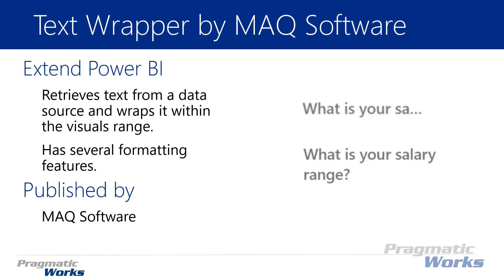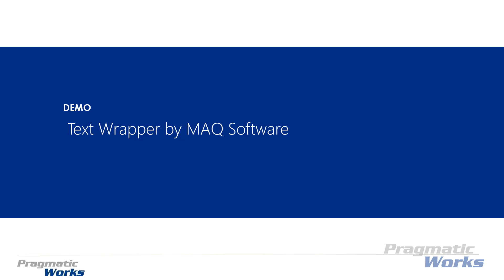There are several format features available when we start to work with it — we can adjust the way the text appears. You can also add prefix or suffix text, which is more static text. For example, maybe I put the word 'question' as a prefix that's always there in my report. Again, this one's designed by MAQ Software. Let's walk through how you can use the Text Wrapper in a simple example.